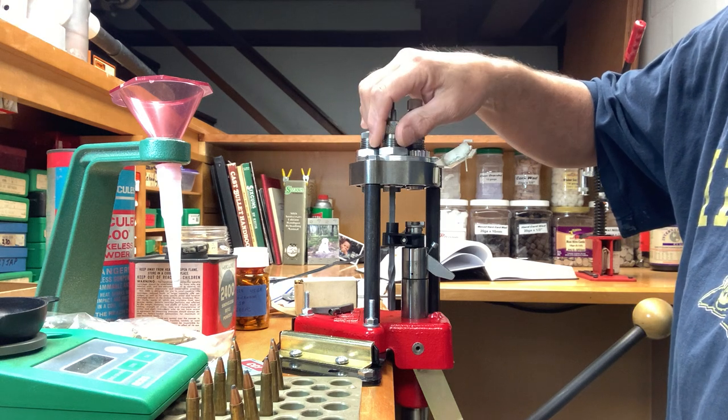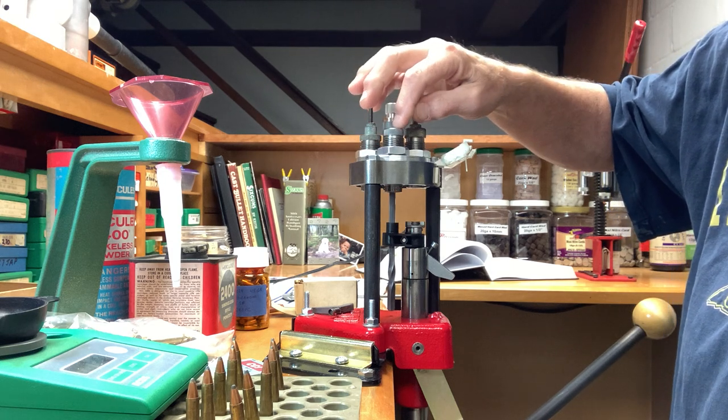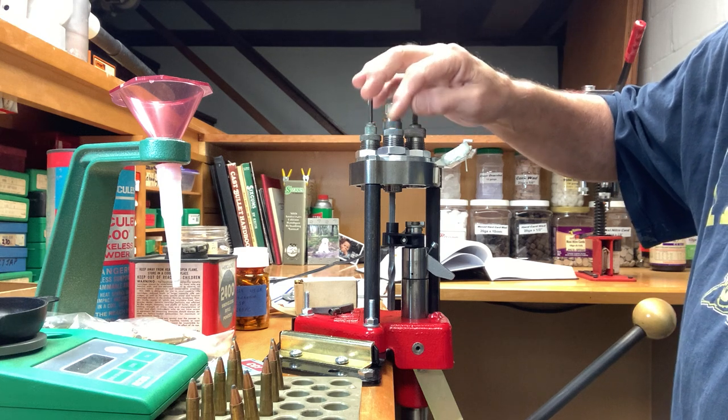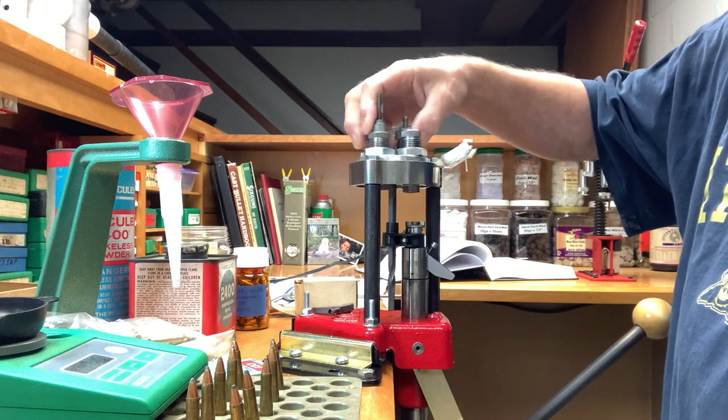The RCBS seating die is not to the crimp, just seating the bullet, because here's something you don't see all the time - a .22 Hornet Lee Factory Crimp die, which I'm glad I got.